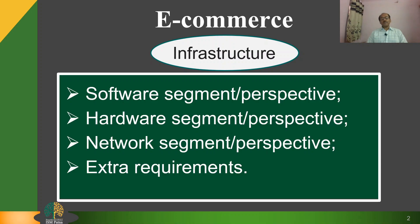The next comes the hardware segment or perspective. Computer hardware includes mainframe computers, PCs, mobile phones, and other handheld devices. In client-server computing, a desktop, laptop, or mobile phone is called a client and is networked to powerful server computers like mainframe computers. Processing work is split between these two types of machines — the clients are the user point of entry, whereas the server typically processes and stores shared data.